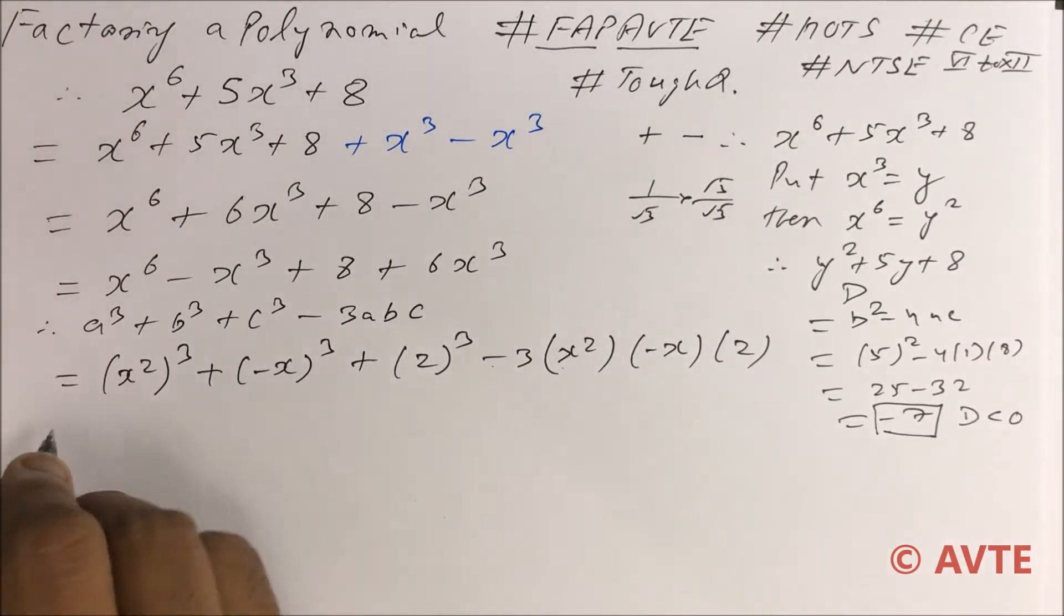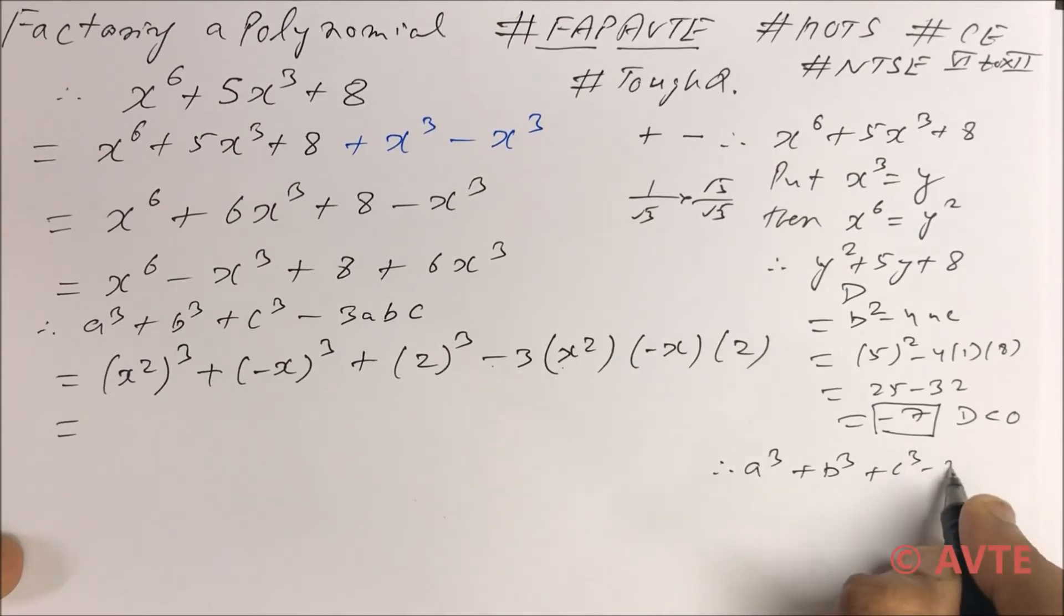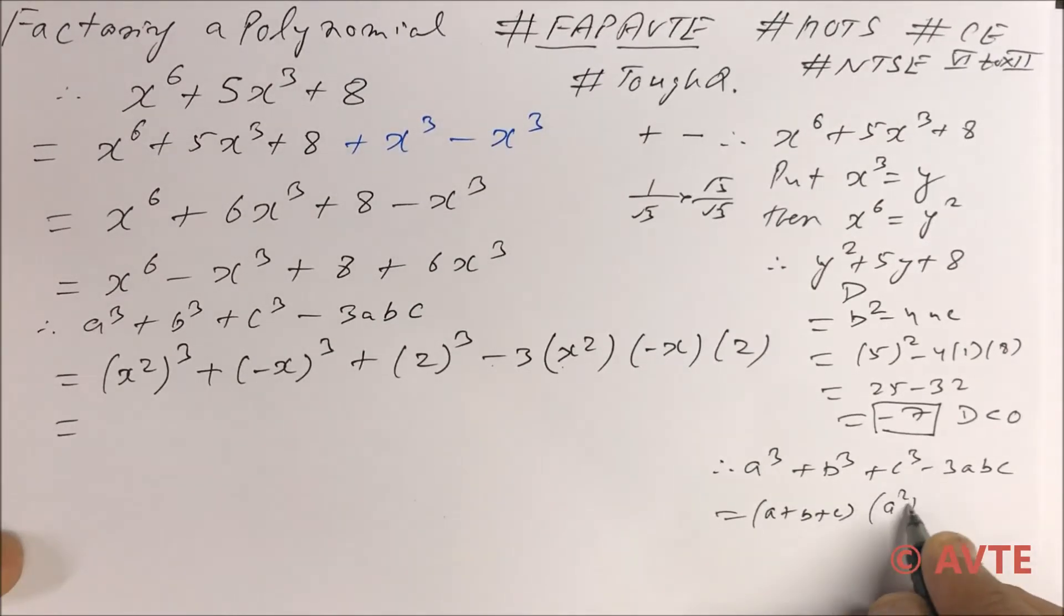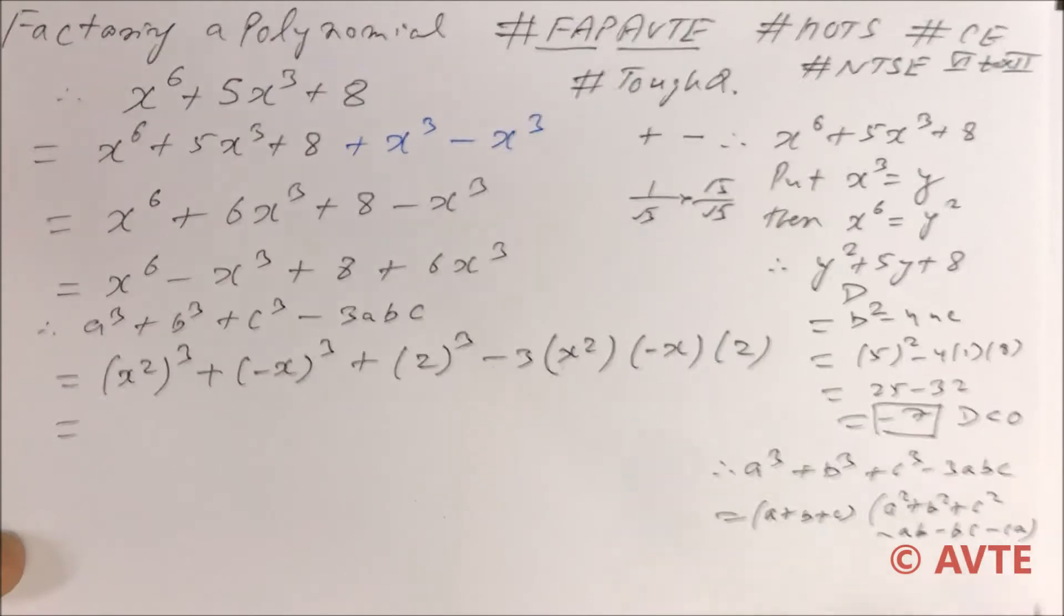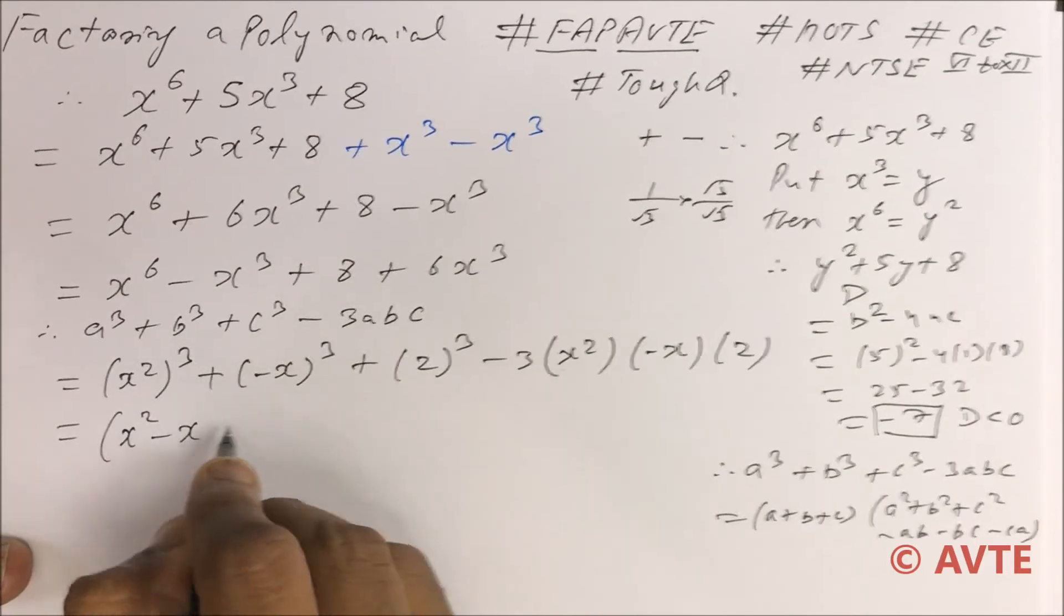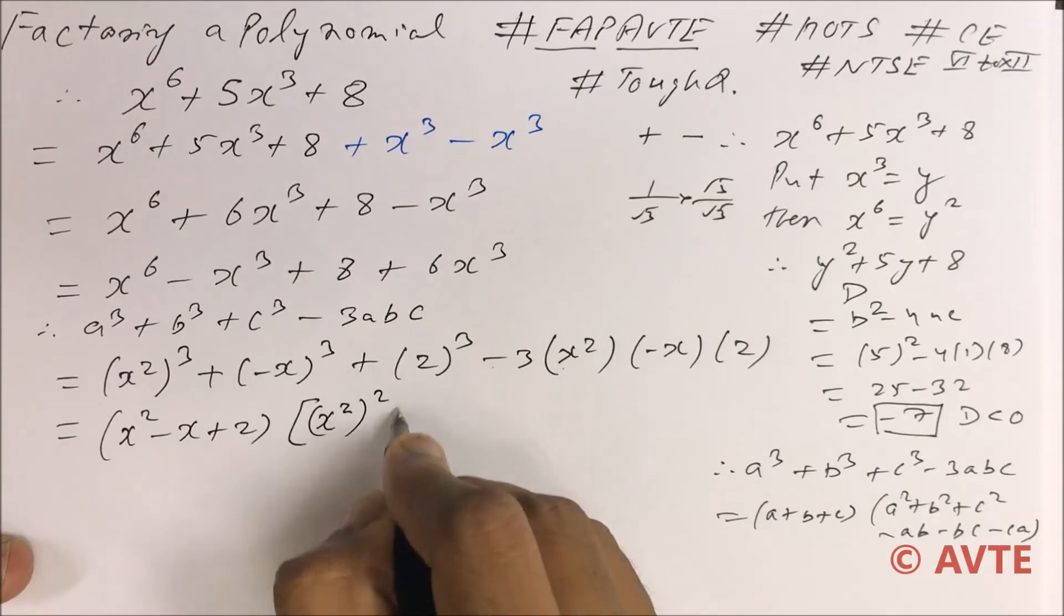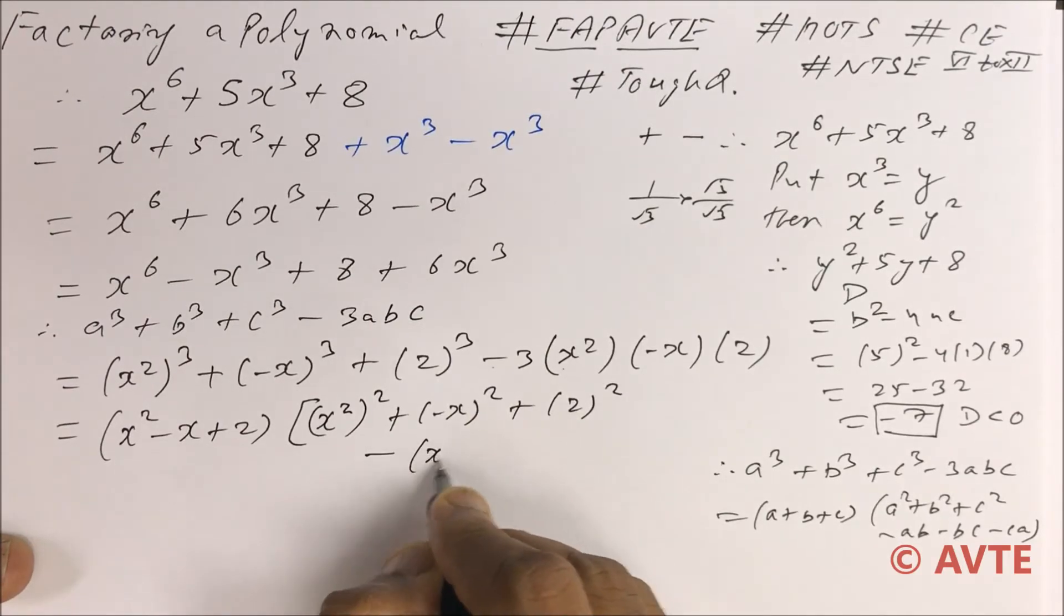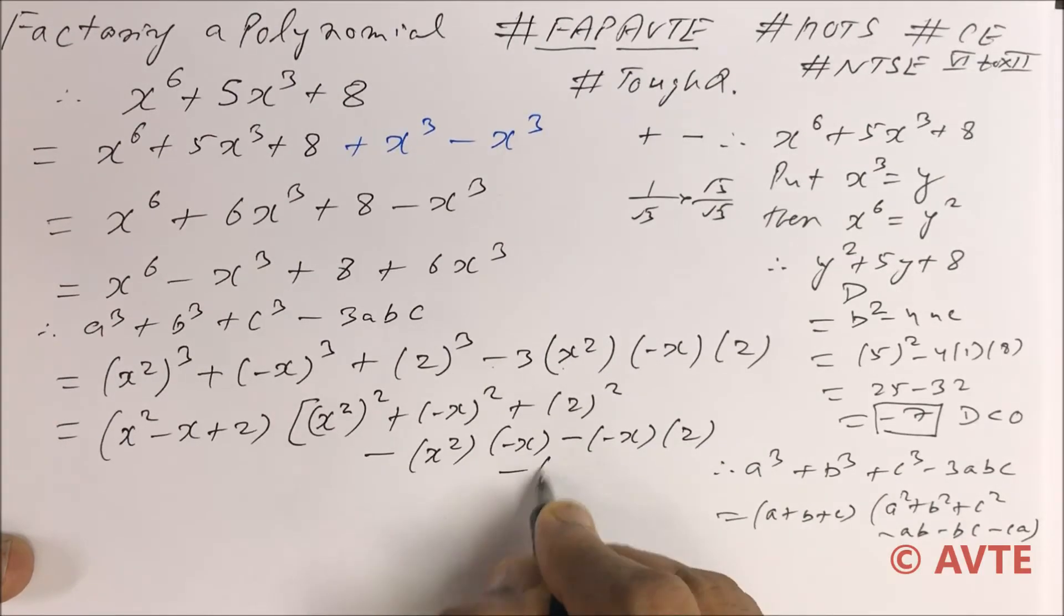So here you go. The formula is a cube plus b cube plus c cube minus 3abc is a plus b plus c. It is a square plus b square plus c square minus ab minus bc minus ca. So the answer is a plus b plus c. Then a square plus b square plus c square minus ab minus bc and minus ca.